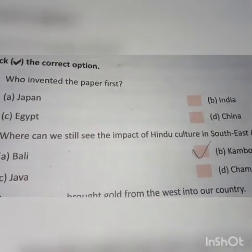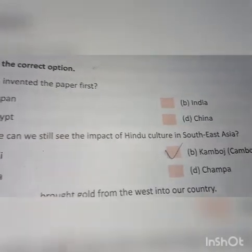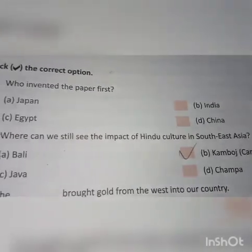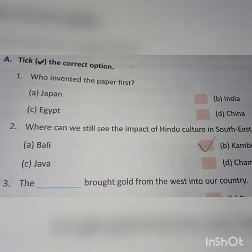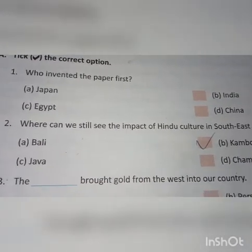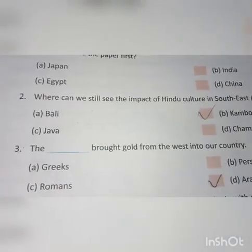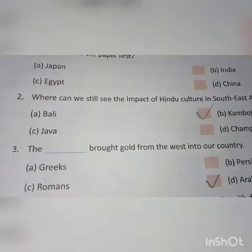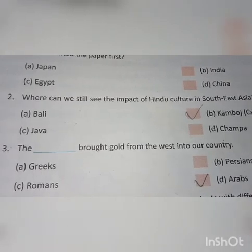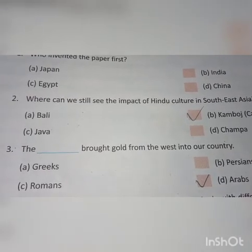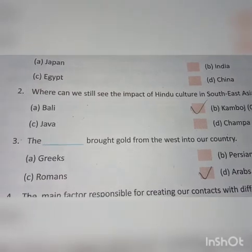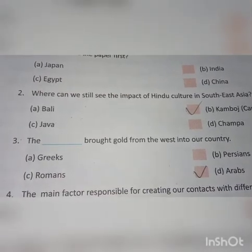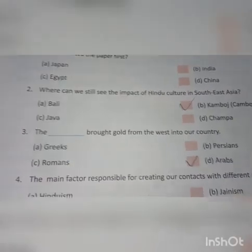Question number two: Where can we still see the impact of Hindu culture in South East Asia? The right answer is A — Bali. Bali is the right answer. Question number three: Who brought gold from the West into our country? The right answer is C — Romans. Romans is the right answer.